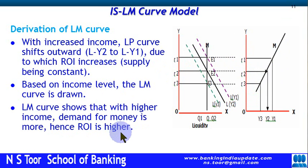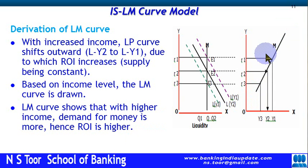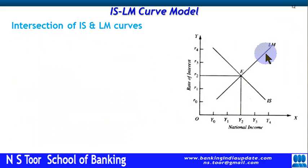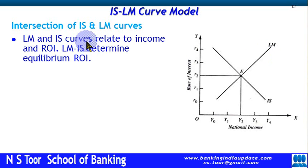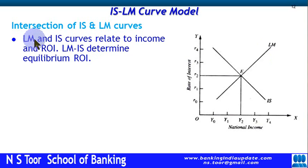When demand for money increases, the rate of interest also increases — here we have a positive relationship. In the previous case of the IS curve, it was a negative relationship. Now there will be a synthesis for the purpose of equilibrium through the intersection of IS and LM curves. LM and IS curves relate to income levels and rate of interest, and their intersection determines the equilibrium rate of interest. When income level changes, these curves shift and impact the rate of interest.